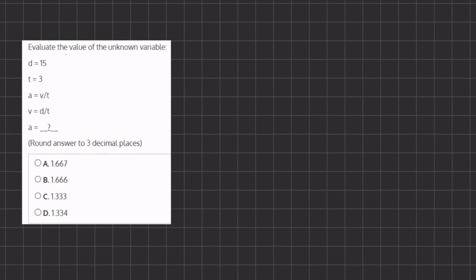In this problem we want to evaluate the value of our unknown variable, and in this case it's going to be a. Now we are given two different expressions: a equals v divided by t, and v equals d divided by t.